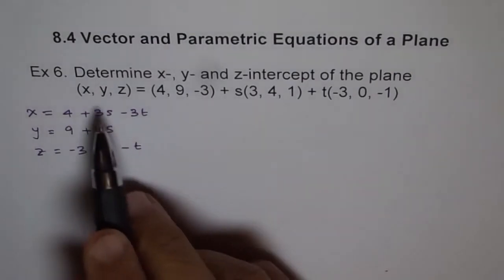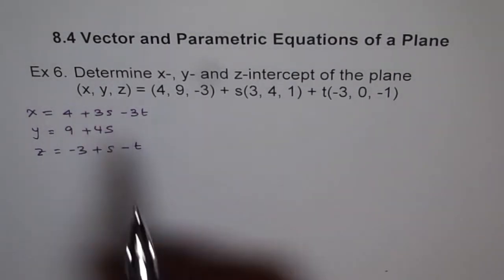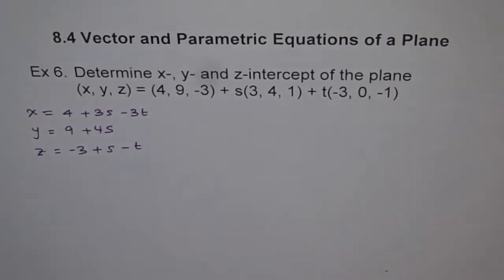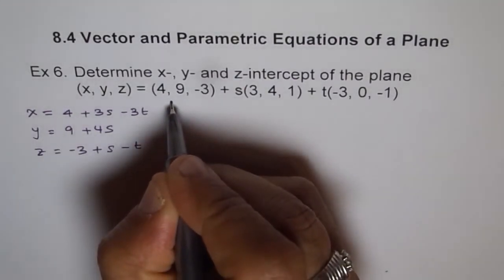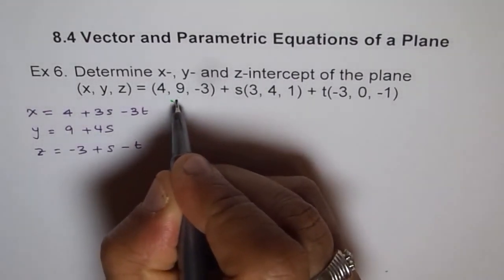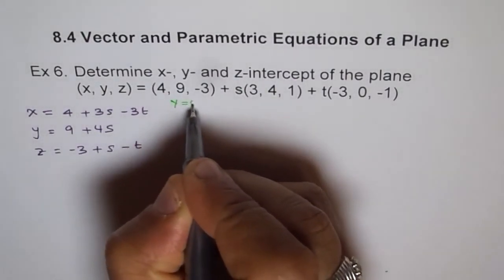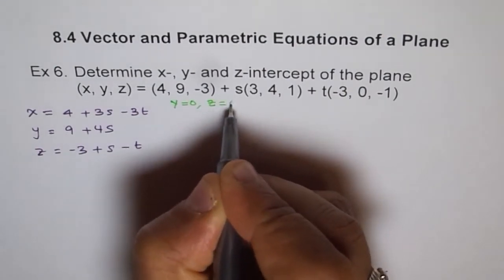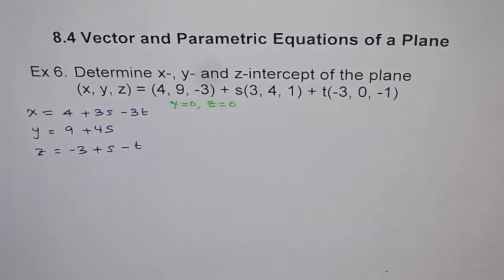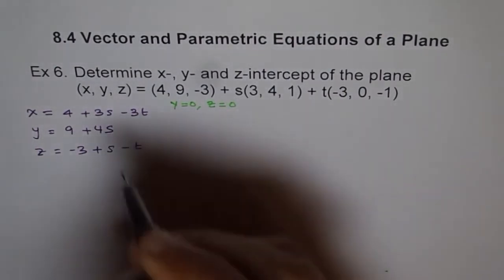For the x intercept, y and z should both equal 0. So the condition we are working with is y equals 0 and z equals 0.